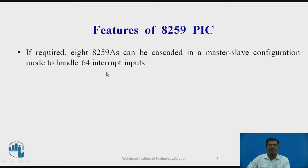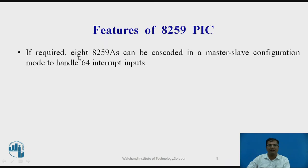If required, a maximum of 8 IC8259s can be cascaded so that it can handle 64 different interrupts. One 8259 supports 8 different interrupts, and 8 cascaded 8259s support 64 different interrupts.